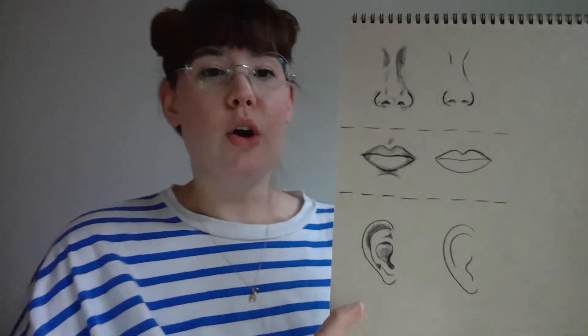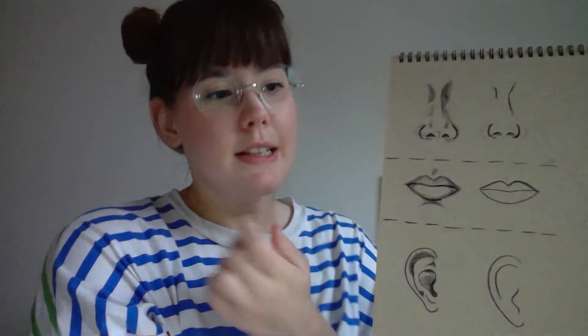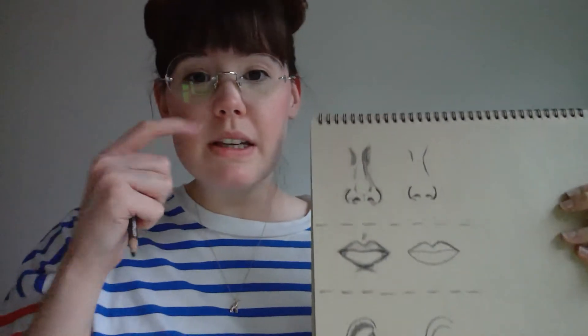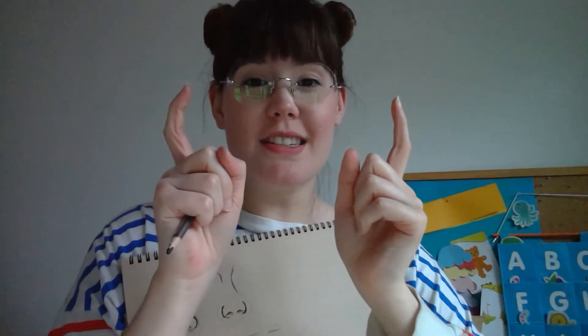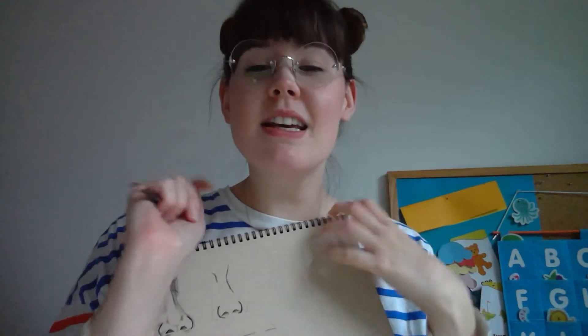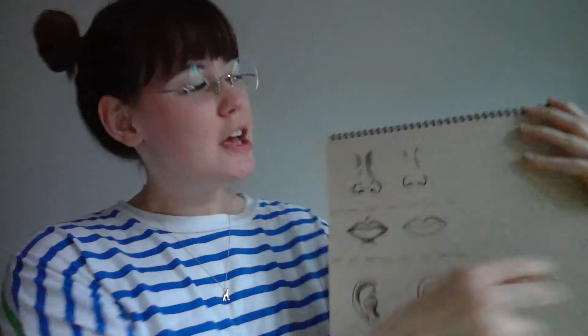Let's start with the nose. I teach middle school, so that's ages 11 to 14. I have to be able to break things down quite simply for certain students. When I teach noses, what I say is: for the sides of your nostrils, you're going to draw two parentheses — everybody knows what parentheses are — and then you do two little rainbows inside of the parentheses. That's literally what I say.